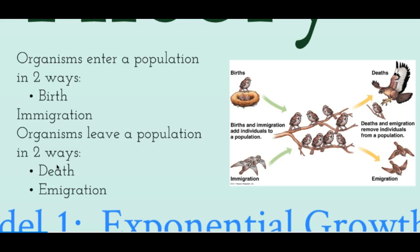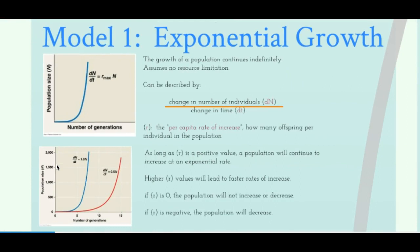The first model we're going to look at is exponential growth. You probably learned about exponential growth in math class, and we have a specific equation for the biology model. As you can see in this picture, there is exponential growth across generations — as the number of generations grows, the population size increases by a lot. The equation is dN/dt = rmax × N, where dN/dt is the change in number of individuals over change in time, rmax is the per capita rate of increase — how many offspring each individual has — and N is the number of individuals within the population.